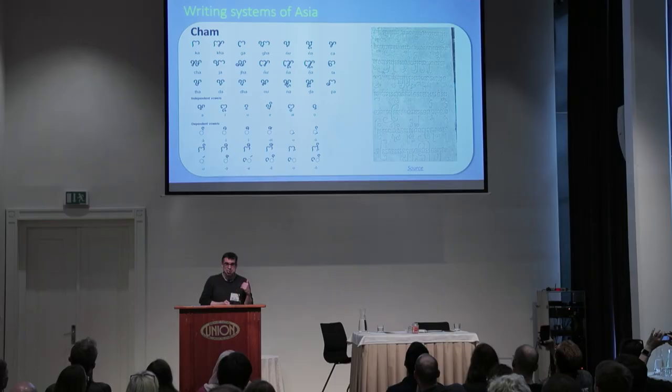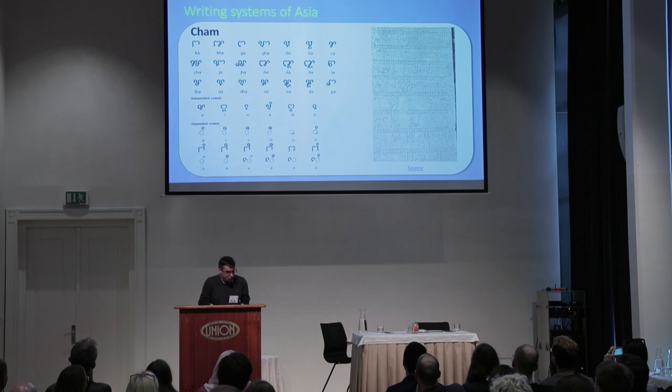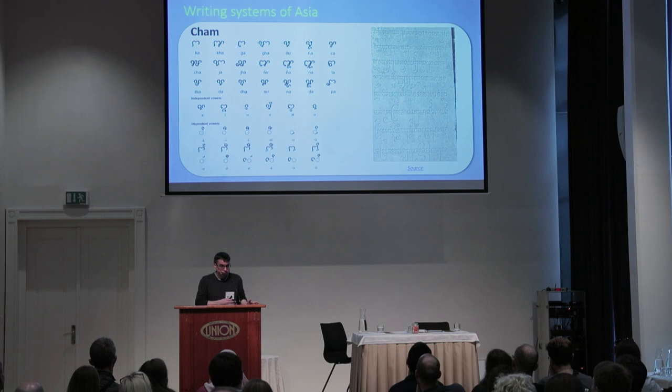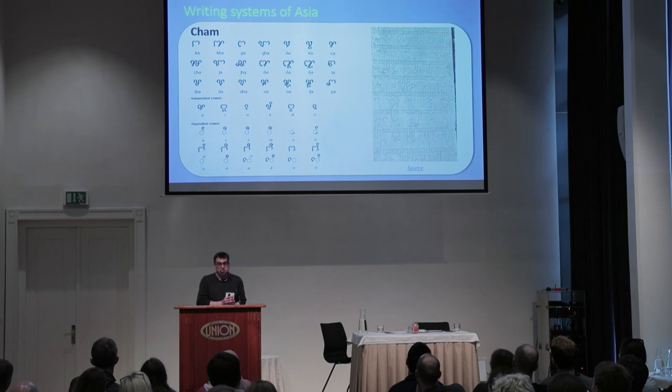Does anybody know where this next script is from? This is Cham — from Cambodia and Vietnam. Cham is a Malayo-Polynesian language spoken in Vietnam and Cambodia. This script dates back to the 4th century AD, making it very old, and developed from an ancient Indic script called Grantha. It was first used to write Sanskrit and then the Cham language. The Cham people in Cambodia are Muslims and use the Arabic script, but only boys traditionally learn it — when boys are about 12 years old they're considered mature enough to learn the script.